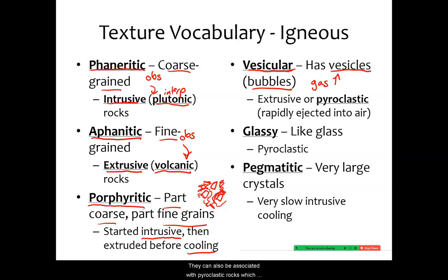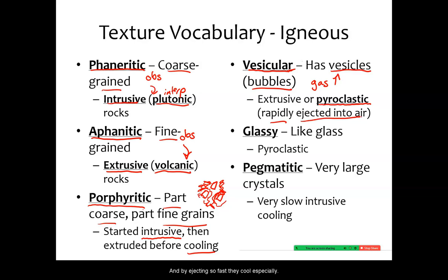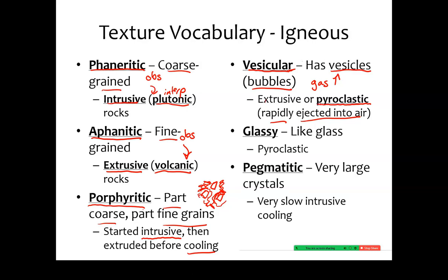Vesicular rocks can also be associated with pyroclastic rocks, which are rocks that have been rapidly ejected into the air. By ejecting so fast, they cool especially fast. Basalt is one extrusive example, but other rocks we're going to see are pyroclastic and made of vesicular texture — namely pumice.